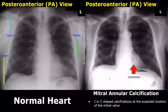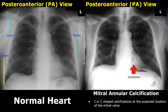Mitral annular calcification can also be seen on a chest X-ray. It usually appears as a J- or C-shaped calcification at the expected location of the mitral valve. The calcification will appear bright or radio-opaque.